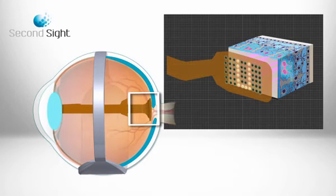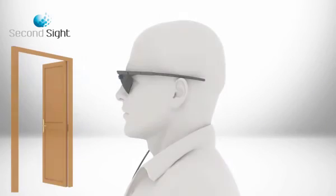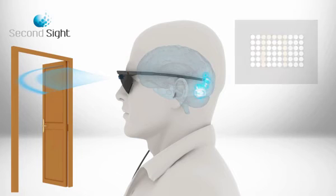These pulses stimulate the retina's remaining cells and are transmitted down the optic nerve, conveying visual information to the brain which perceives patterns of light.